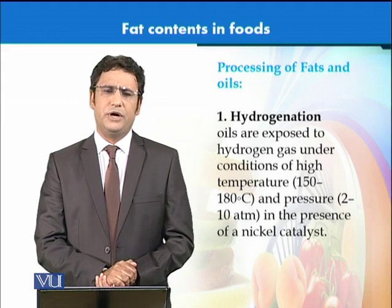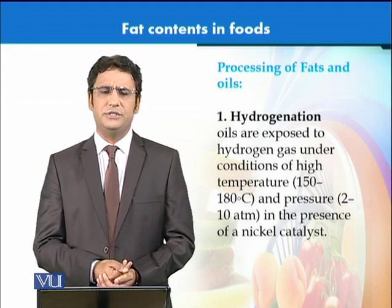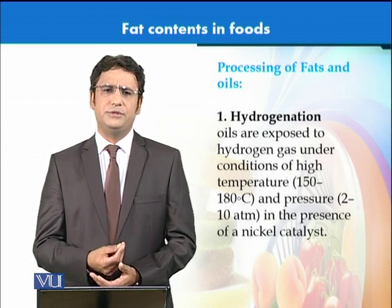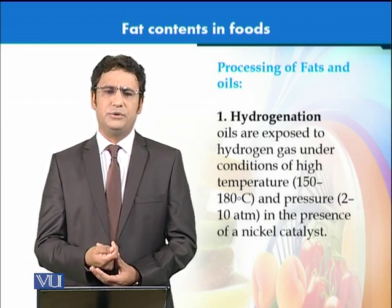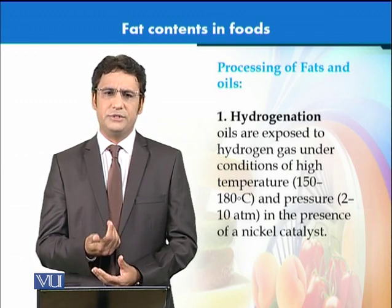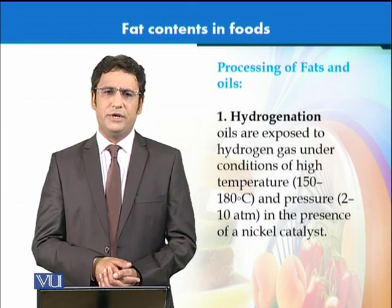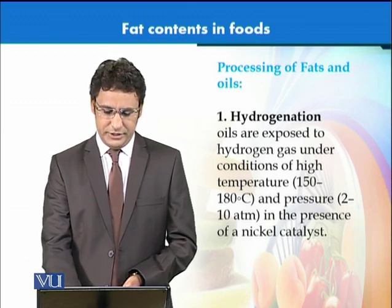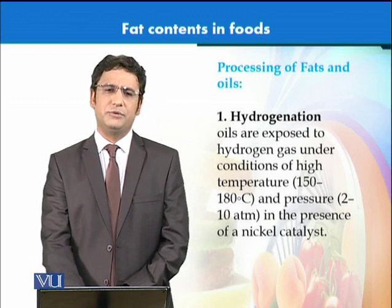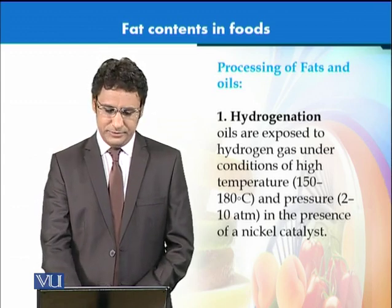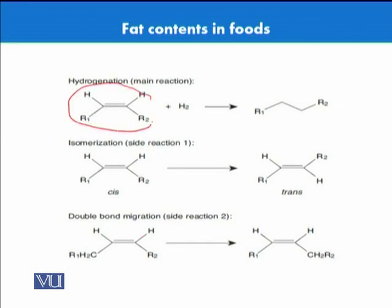Processing of fats and oils involves two key processes: hydrogenation and interesterification. Hydrogenation is done to produce vanaspati ghee. During this process, hydrogen gas is added to the double bonds in the presence of a catalyst — mostly nickel — at a temperature of 150 to 180 degrees Celsius and about 10 atmospheres of pressure. This produces saturated fats like vanaspati ghee. Where there is an unsaturated double bond, the addition of hydrogen gas produces a saturated fatty acid.